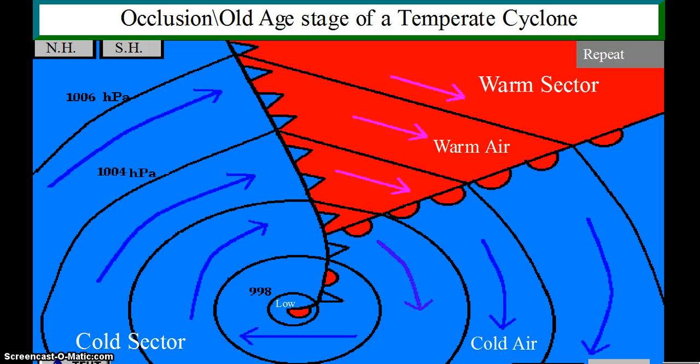The cold front moves faster than the warm front, overtaking it. The warm sector is lifted off the ground. The two fronts combine and move as an occluded front.